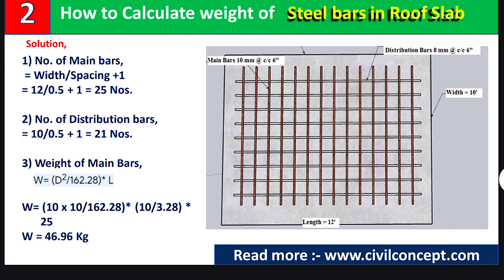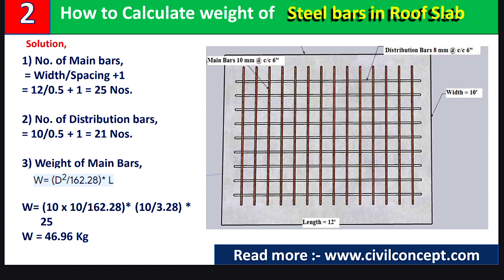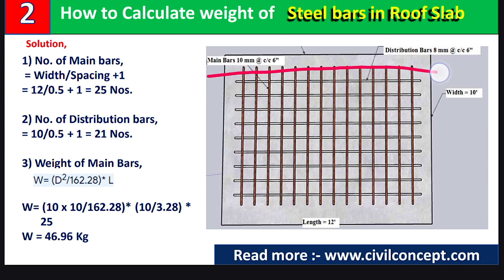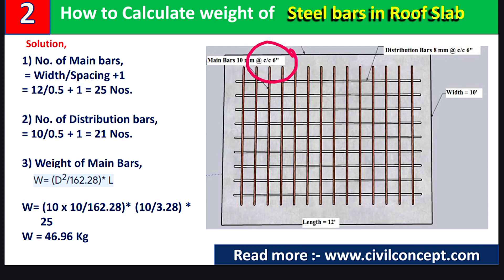First, in step 1, we calculate the number of main bars. The formula is: number of bars equals width of slab divided by spacing, plus 1. We take 12 feet because the main bars are laid in that direction. So it is 12 feet divided by the spacing.